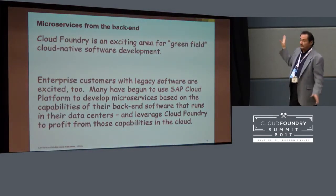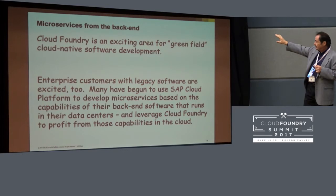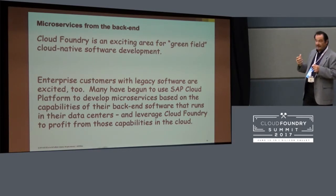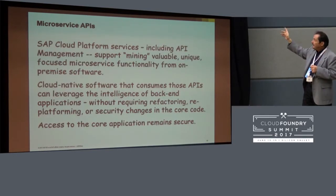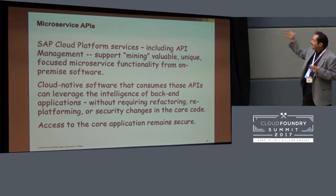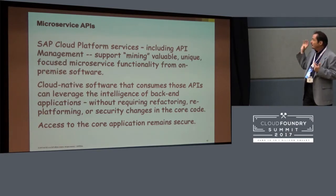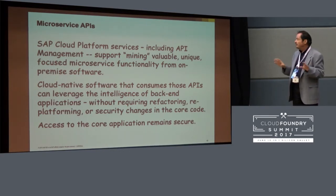Cloud Foundry is great if you're doing greenfield cloud-native development, but if you've got legacy software, you can be excited about that because you can develop microservices based on the capabilities you already have in back-end software running in data centers, and you can leverage it in the cloud. API management is very important for this — mining valuable focused functionality from on-premise software. We consume those APIs with cloud-native software, and there's no required refactoring, replatforming, or any changes in the back-end code. The security remains the same.